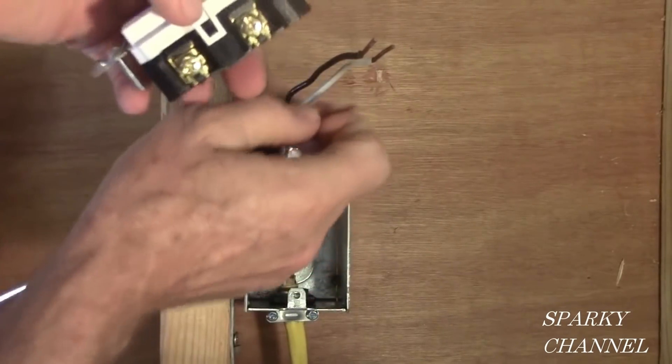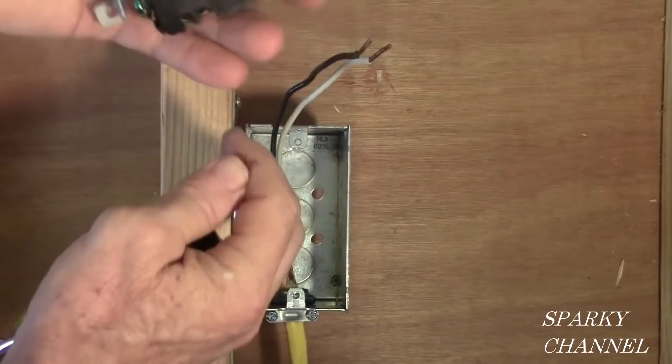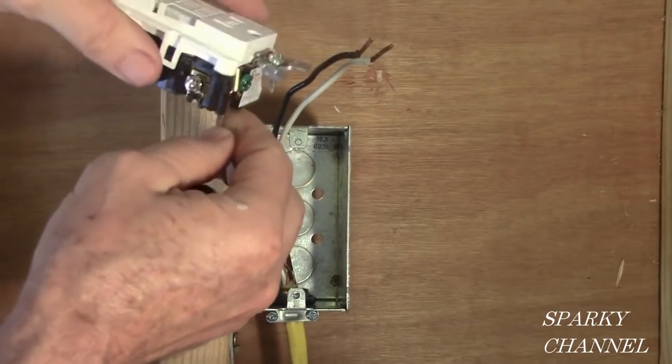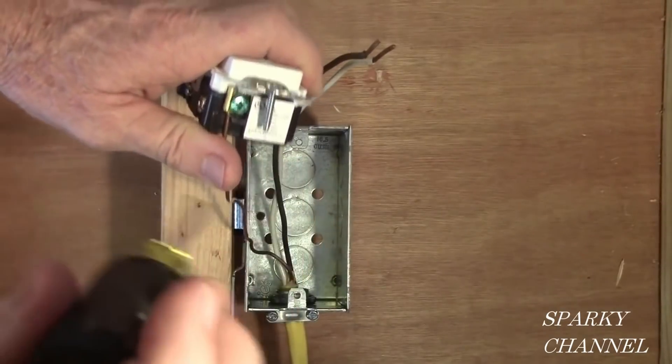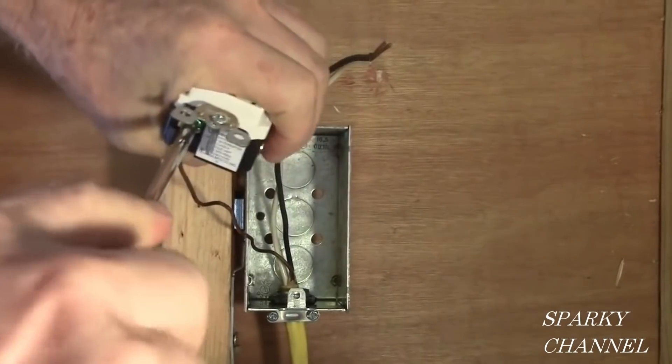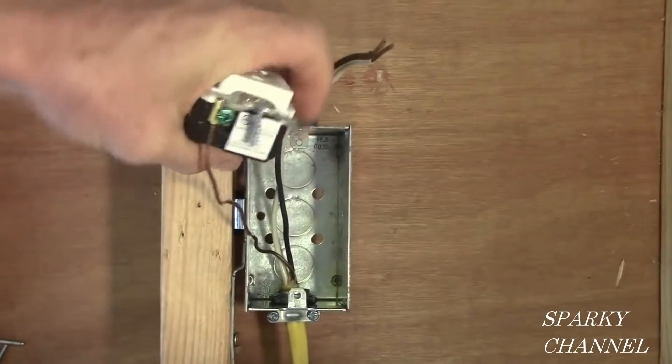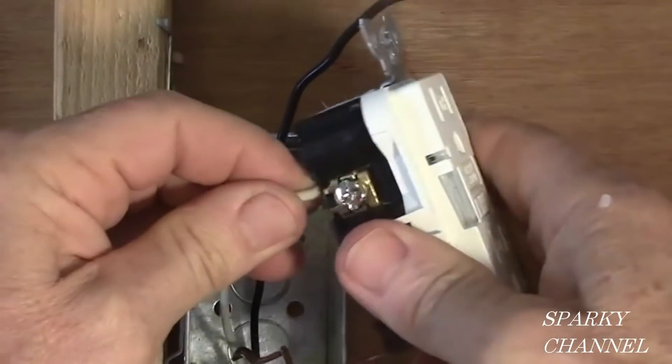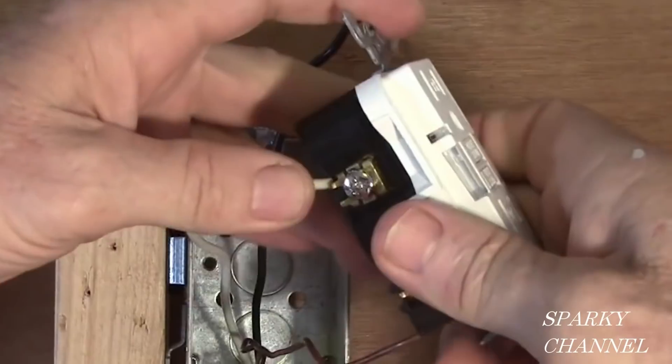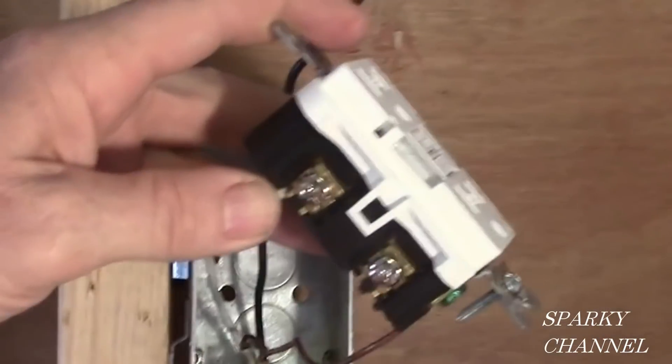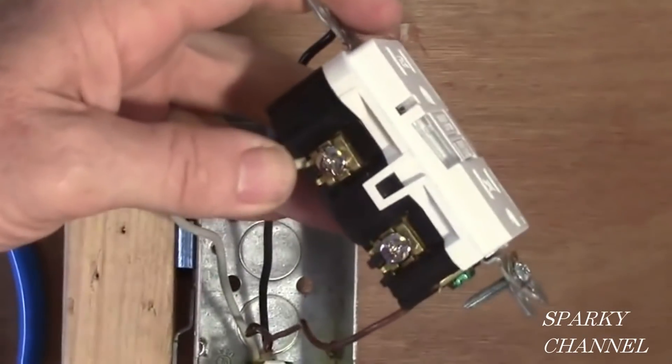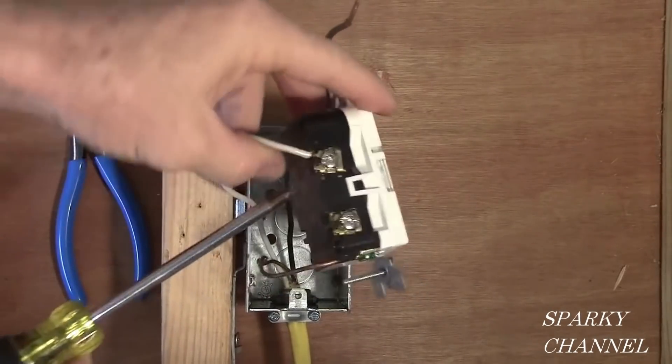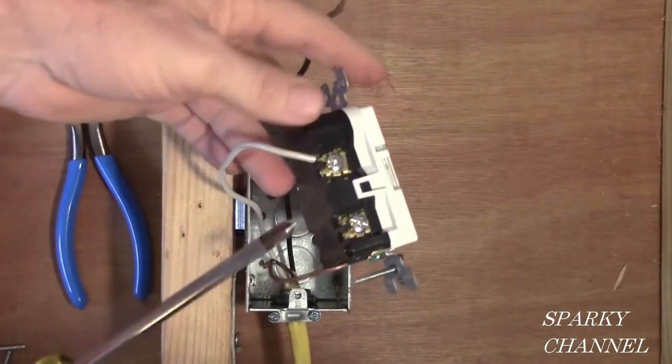So the first thing I'm going to do is take the ground and hook it up. Put it right down here. Okay, it's on real nicely. Next, I'm going to take the neutral and put it underneath the terminal with the silver screw and tighten that down. And this is on the line side of the ground fault circuit interrupter.